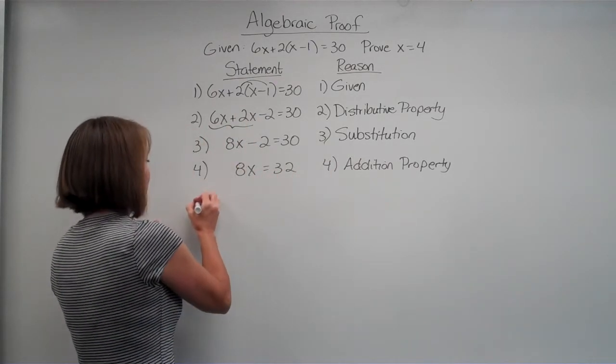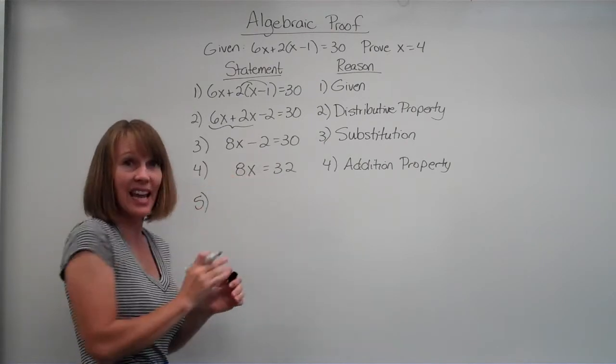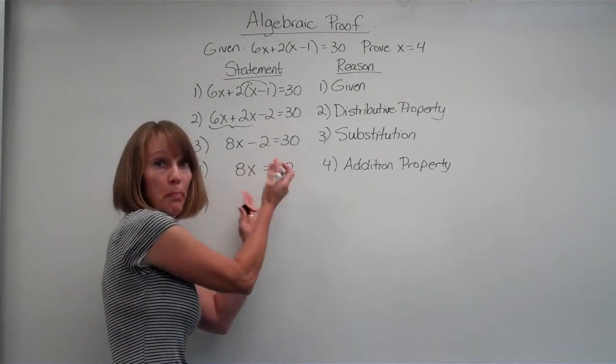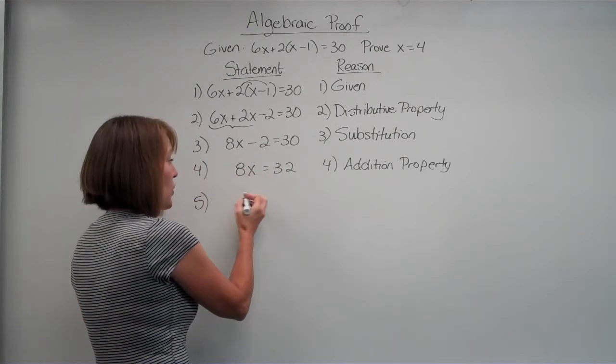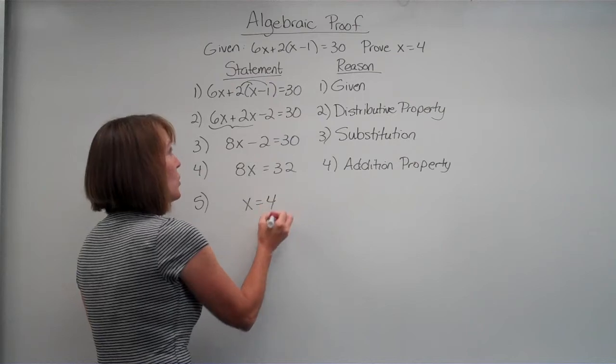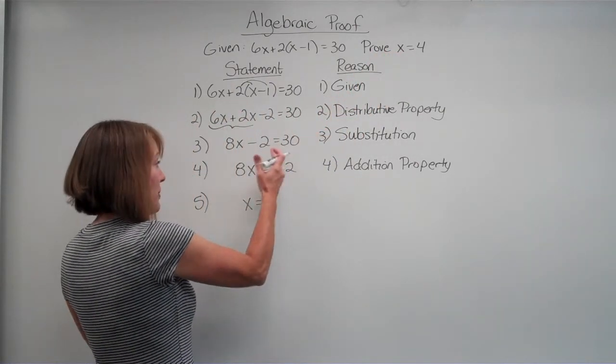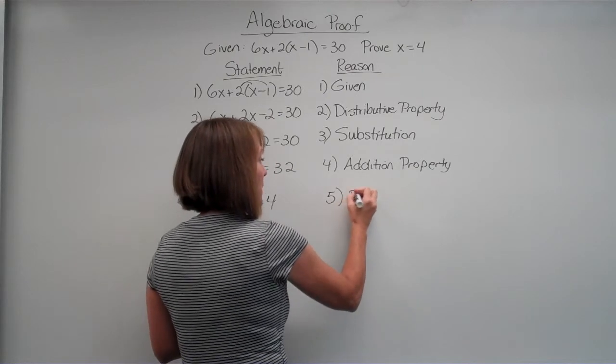Alright, last thing. What are we going to do? We need to get rid of this 8x. Opposite of multiplication is division. We're doing it on both sides. When we do our division, we get x is equal to 4, which is what we're trying to prove. So how did we get from here to here? We use the division property.